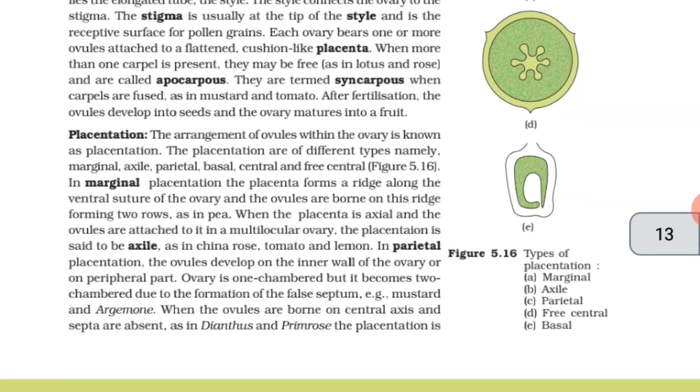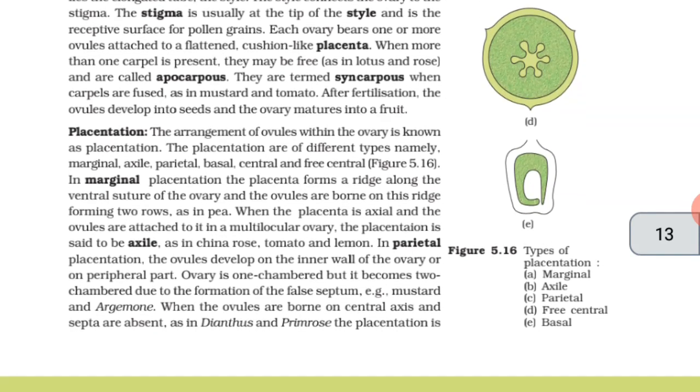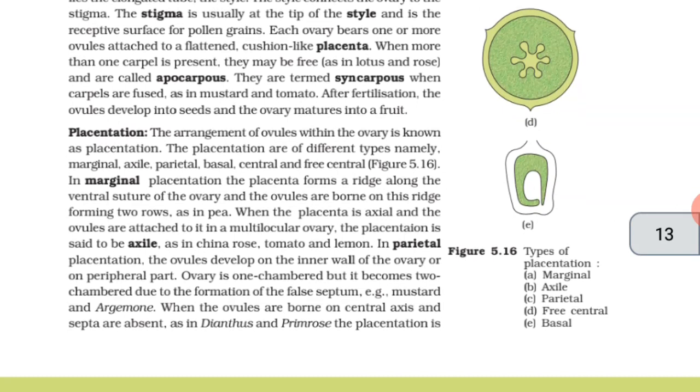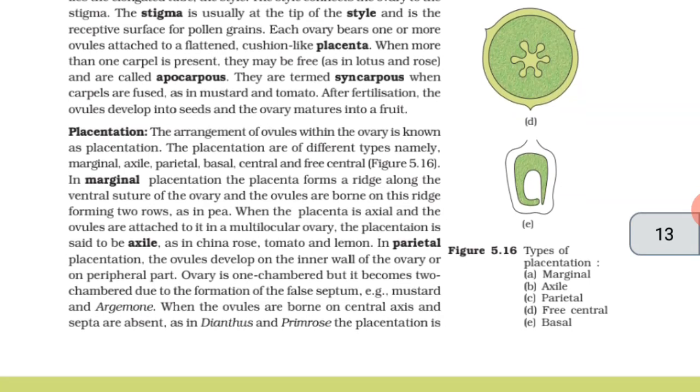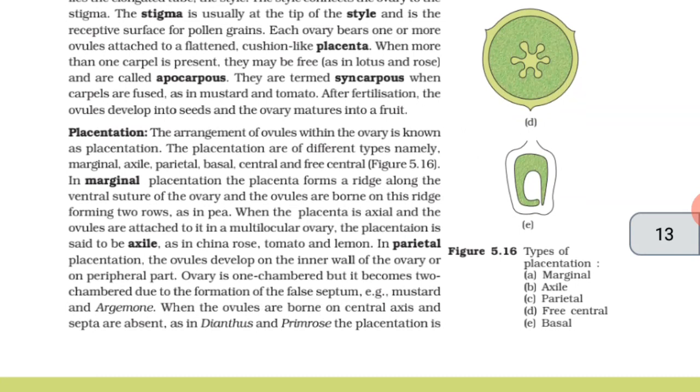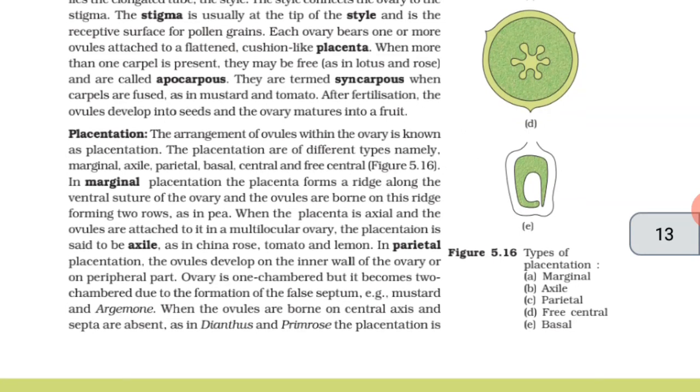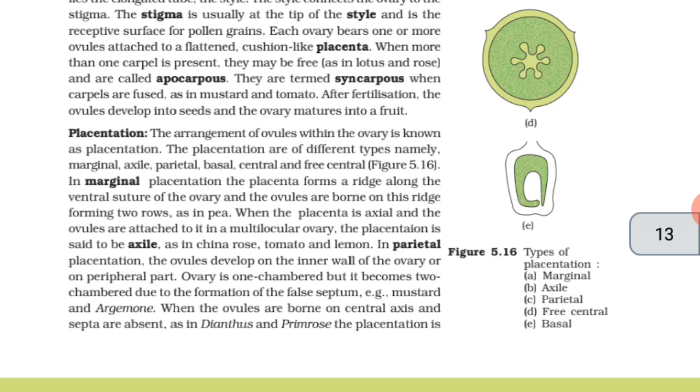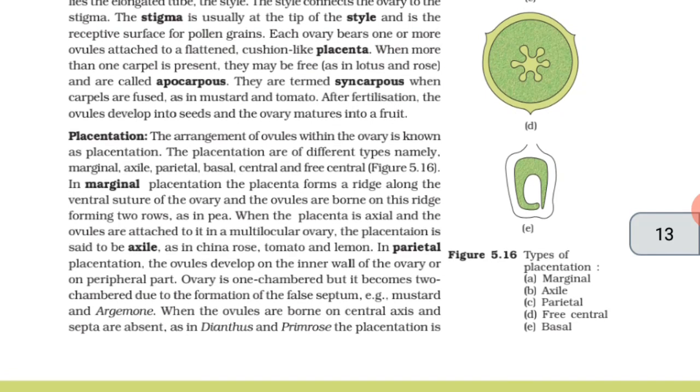In marginal placentation, the placenta forms a ridge along the ventral suture of the ovary and the ovules are born on this ridge forming two rows as in pea. When the placenta is axile and the ovules are attached to it in a multilocular ovary, the placentation is said to be axile as in china rose, tomato and lemon.